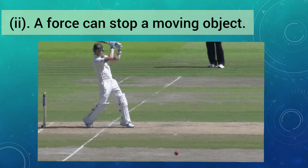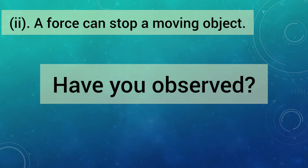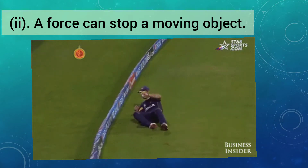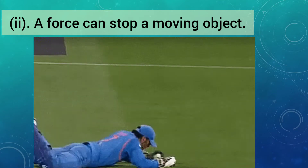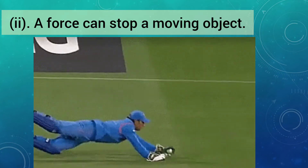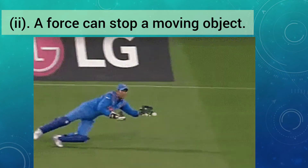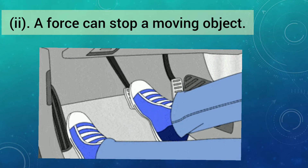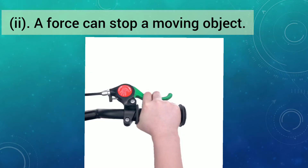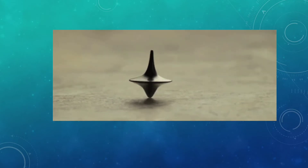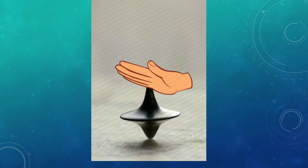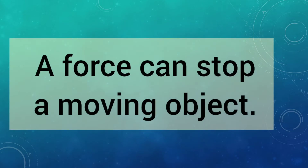Students, you must have watched a cricket match. Have you observed how the fielders dive to stop the ball from crossing the boundary? They are applying force with their hands to stop the ball. Similarly, when you apply brakes on a car or moving bicycle, it stops. Have you seen any spinning top? A spinning top can be stopped by the force exerted by hands. All these examples prove that force can stop a moving object.